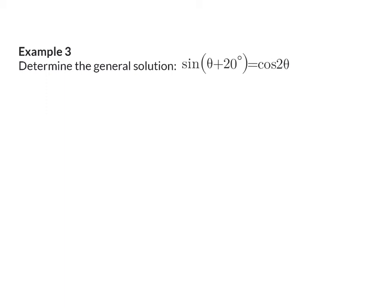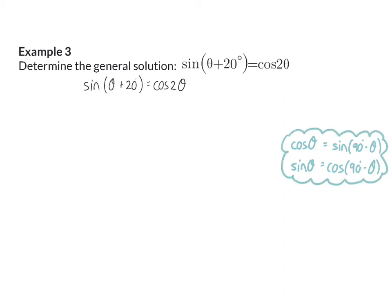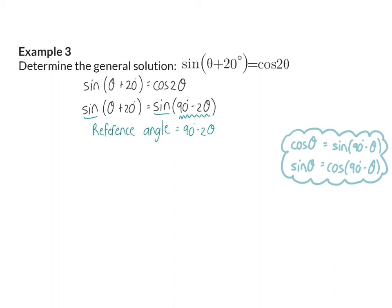For that we need to remember that sin and cos are co-functions. Cos of theta is the same as sin of (90 degrees minus theta), and sin of theta is the same as cos of (90 degrees minus theta). So in example 3, we keep the left-hand side in terms of sin, and change the right-hand side cos(2θ) to sin(90 degrees minus 2θ). This one extra step gives us the same trig function on both sides, meaning 90 − 2θ becomes our reference angle.